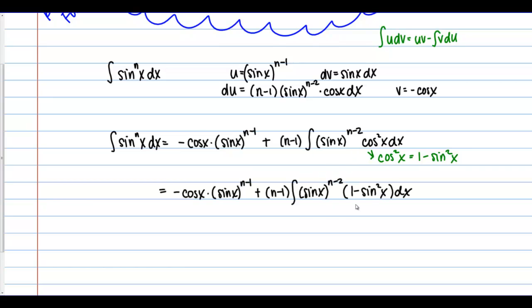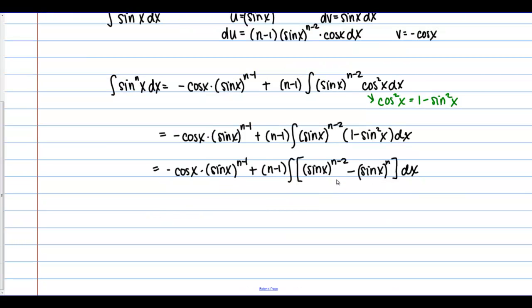Now, inside my integral, I am going to go ahead and expand this. When I distribute this sine x to the n minus 2 power, I'm going to multiply it by 1 first of all. Then when I multiply it by sine squared of x, I'm just going to get sine of x to the n power.